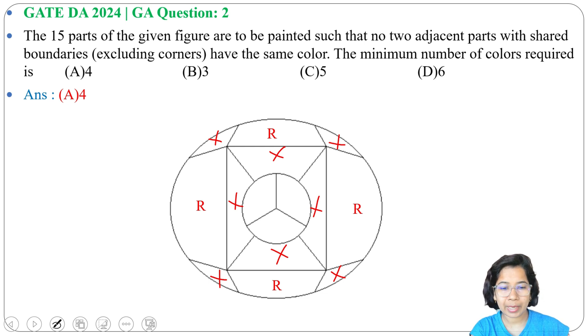Next we assign green color. Green we can assign to any one of these two, so let me assign green here. After assigning green, green cannot be here, green cannot be here as it is adjacent. It can't be here, it can't be here, but green can be in the upper part.